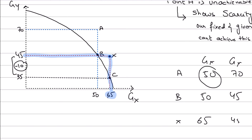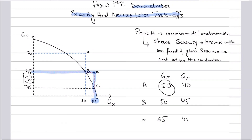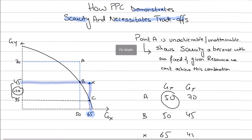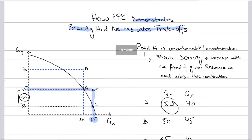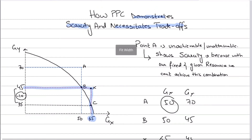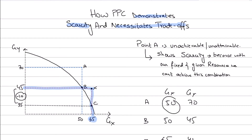Just superficially writing that scarcity makes a point unattainable and a trade-off should be made is not enough — it's not about what you write, it's about how well you write it. That's it for this video. I hope you understood the concept; if yes, please mention it in the comments and let me know if you're enjoying these videos. I'll see you in the next video — take care.